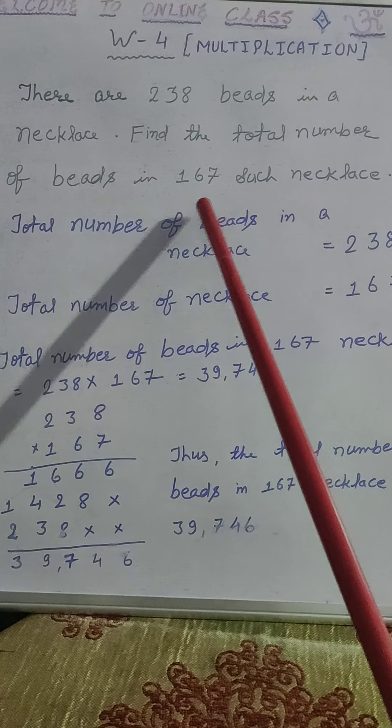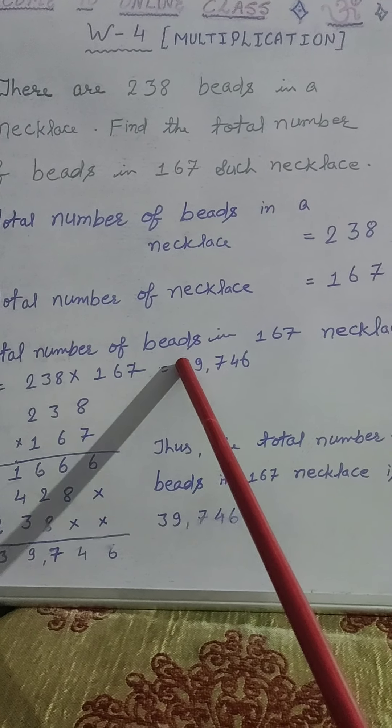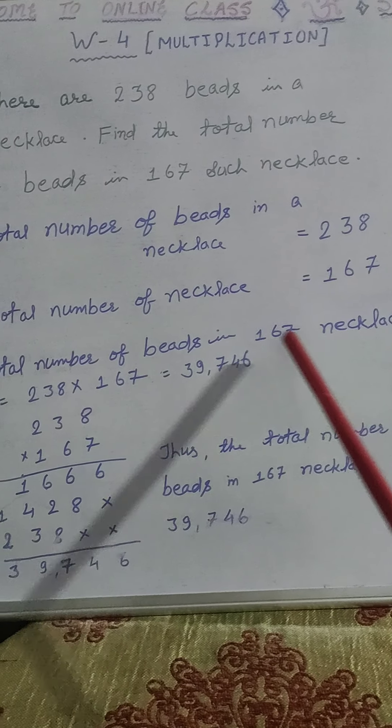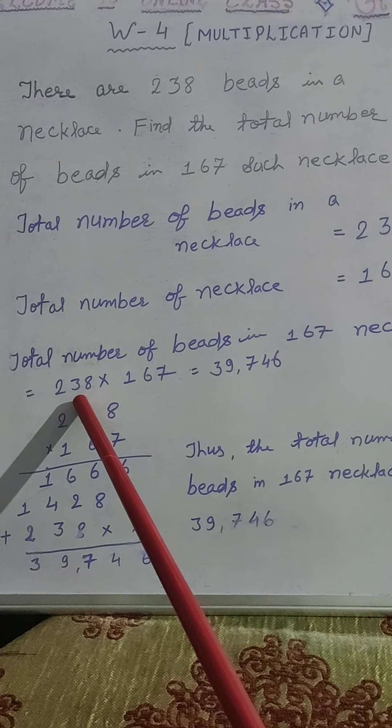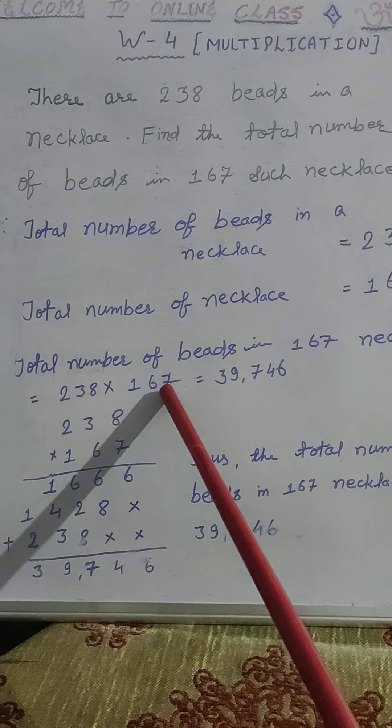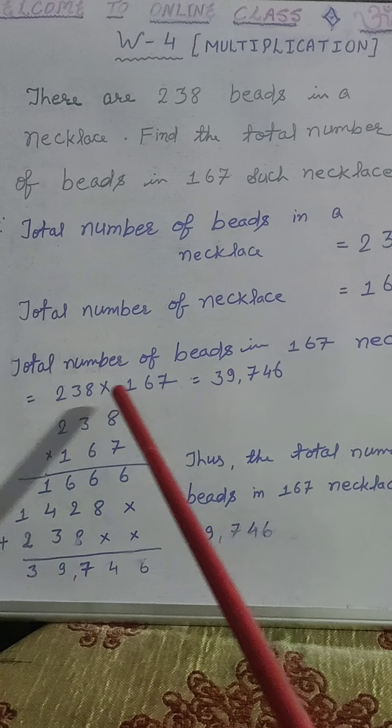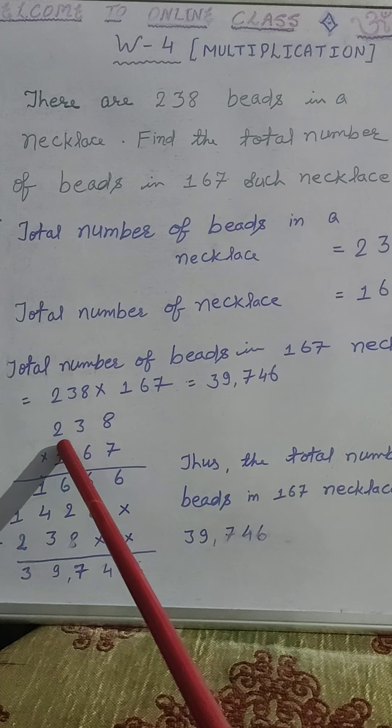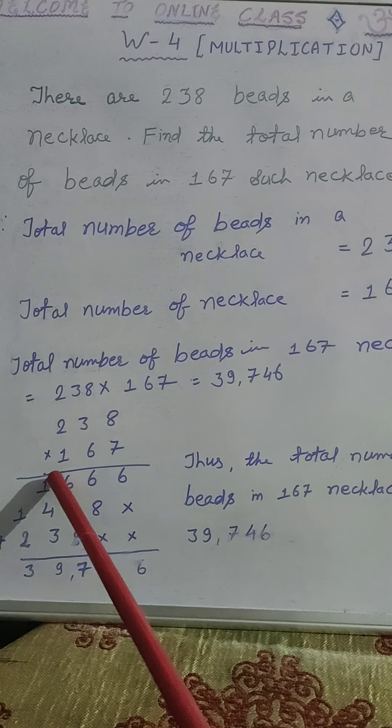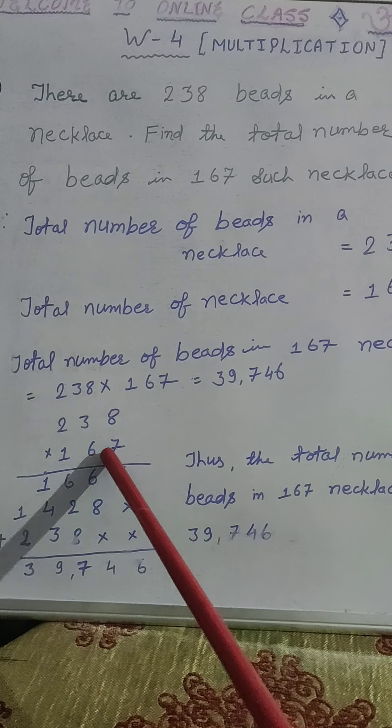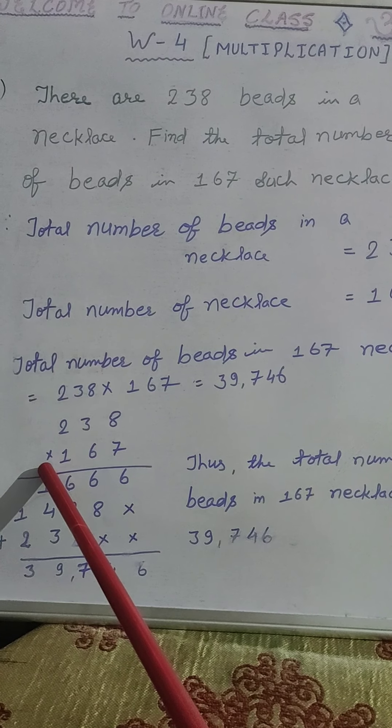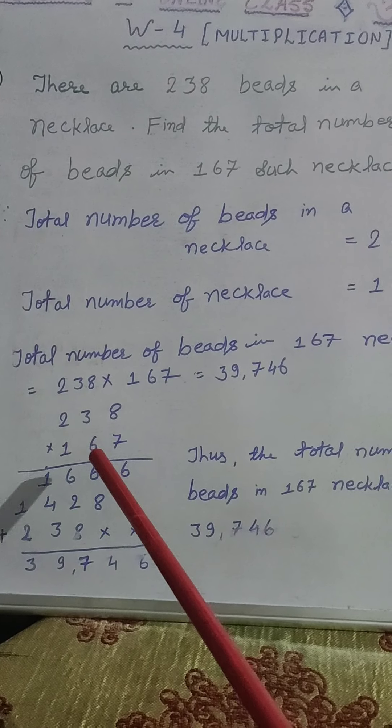We have to find the total number of beads in 167 necklace. For this we have to multiply that is 238 into 167. For multiplication, at first we will write 238, then after we will write 167. And we should also put multiplication symbol here. Now, we start multiplication.